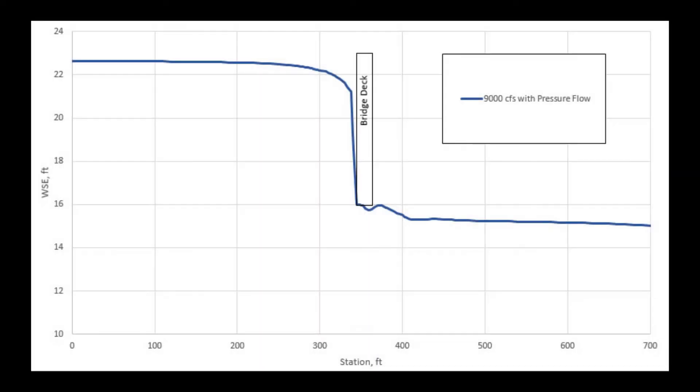The influence of a bridge deck can be split into two components, including pressure flow under the bridge and weir flow over the bridge if necessary.